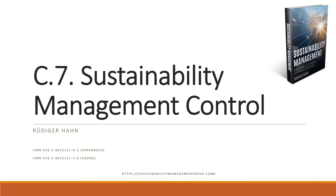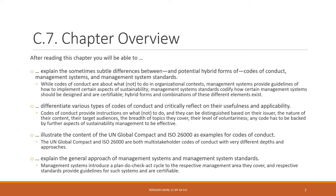Let's have a look at what you can expect from this chapter. After reading it, you'll be able to explain the sometimes subtle differences between codes of conduct, management systems, and related management system standards, as well as hybrid forms. Codes of conduct are about what to do or not to do; management systems provide guidelines on how to implement sustainability; standards codify how sustainability management systems should be designed and are certifiable. Hybrid and combination forms of these elements also exist.